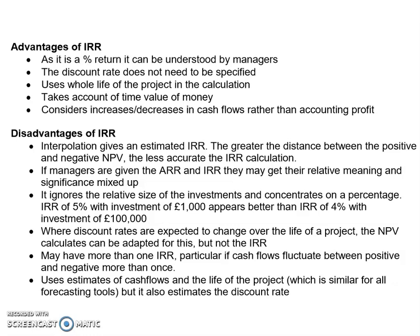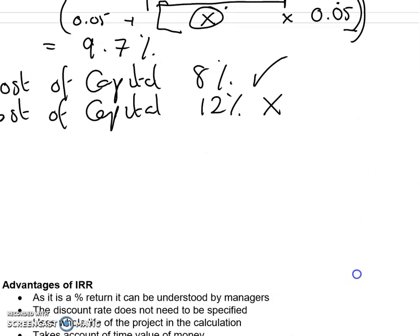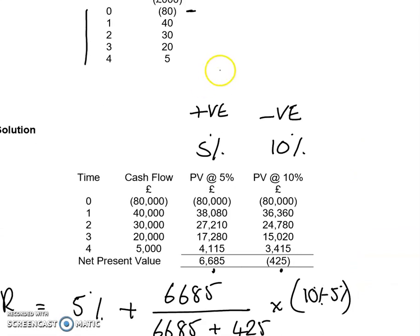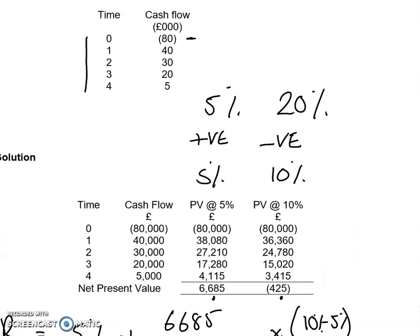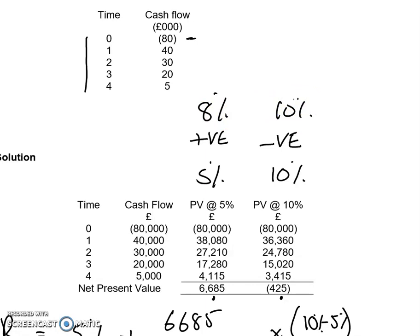The problem with it as a technique is that the interpolation mathematical calculation gives an estimated IRR. The greater the distance between the positive and negative NPVs, the less accurate the IRR calculation. For example, if I'd chosen cost of capitals of 5% and 20%, that would have been less accurate. If I'd chosen 8% and 10%, it would have been more accurate. It doesn't mean it's wrong when that distance is greater — it's just less accurate.